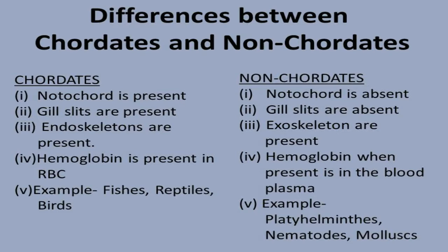The vertebral column was present primitively and has become our backbone. This is why we are called chordates. Non-chordates, on the other hand, do not have a vertebral column or notochord — this is why they are called non-chordates.